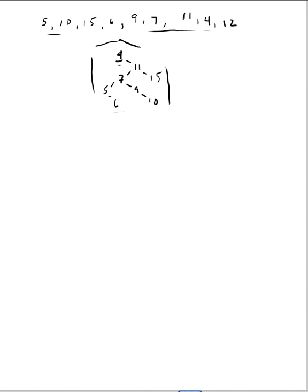I only have one value left to insert — the 12. 12 is greater than 4, greater than 11, less than 15 — so there's where my 12 goes, right there. I have here a zigzag construct, so AVL rotation: first this one and then this one. I've got 11 with 12 and 15 — after the rotation, 12 has the two children 11 and 15.